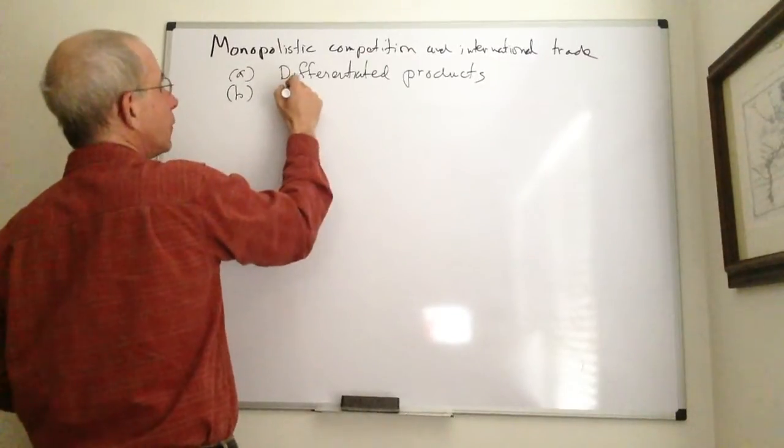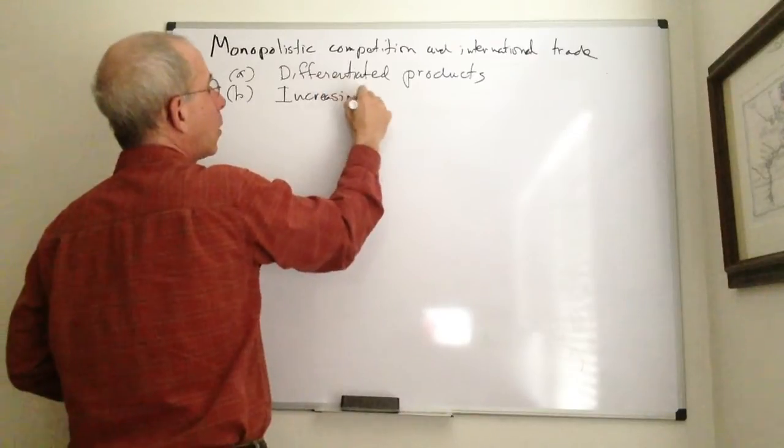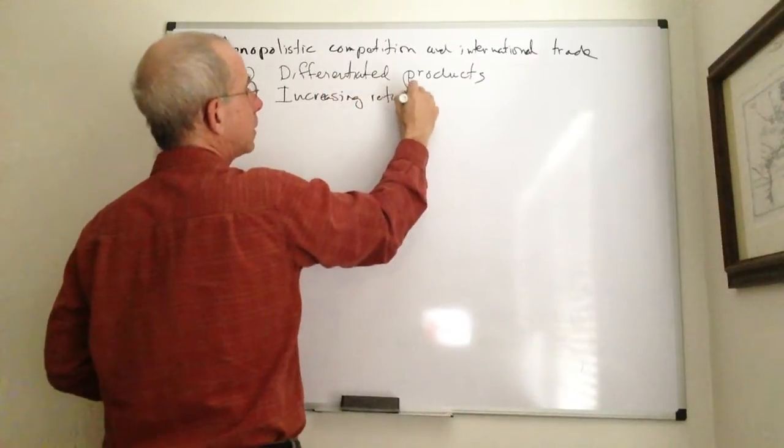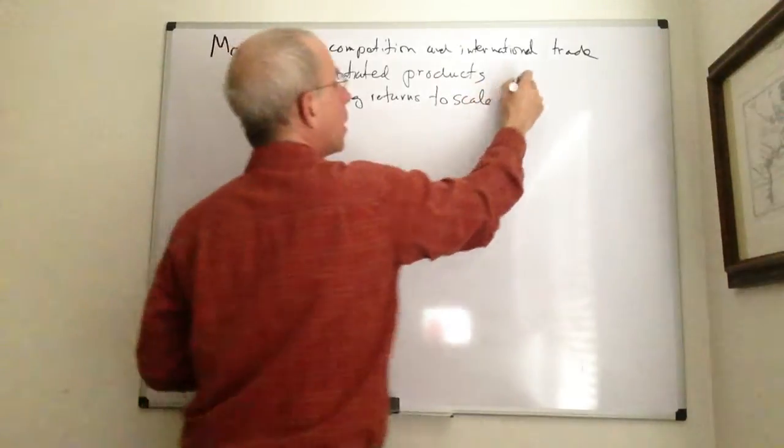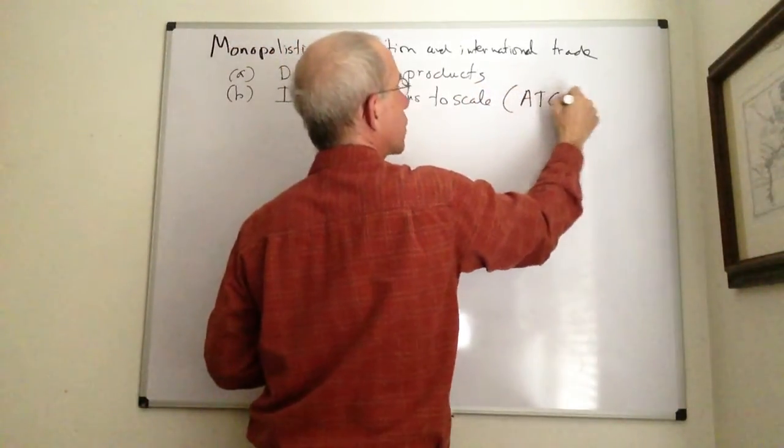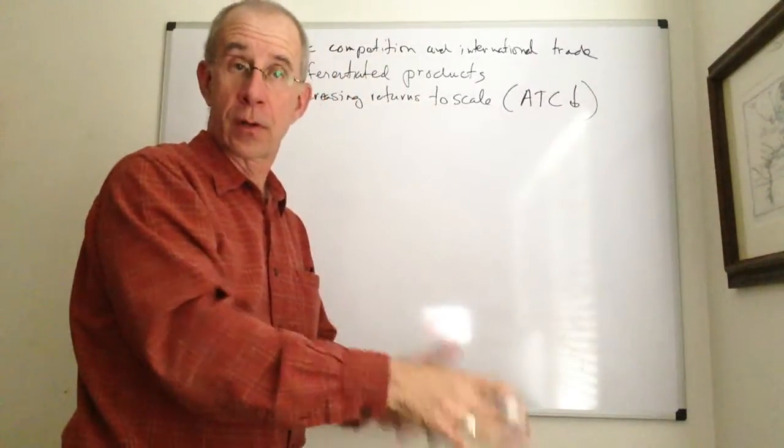We're going to have increasing returns to scale. In other words, average total cost is declining. As you produce more, costs go down.